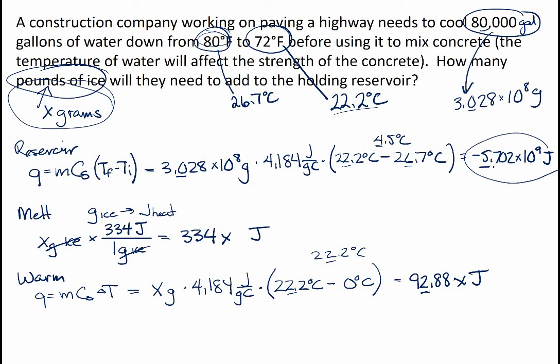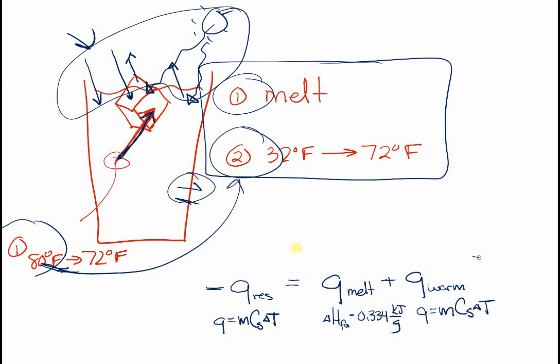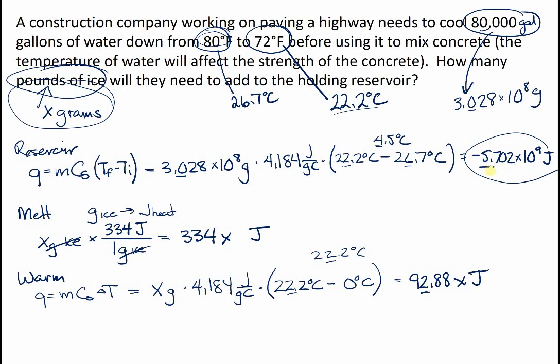Now we can go back to that equation we figured out, each of the little pieces for this problem. That equation we had there - we can take the negative of the q_reservoir, so 5.702 times 10 to the 9 joules, it was negative and I'm taking a negative q, is equal to 334x joules plus 92.88x joules. The 334 plus 92.88 came out to be 426.88x joules.